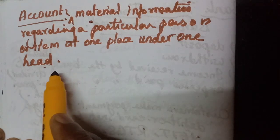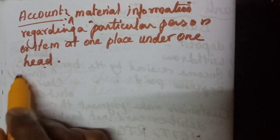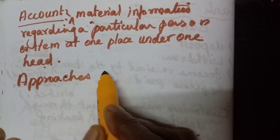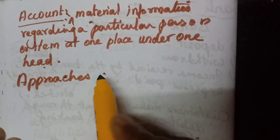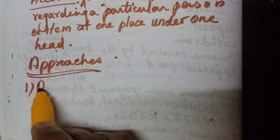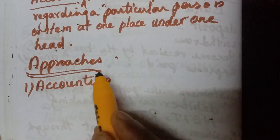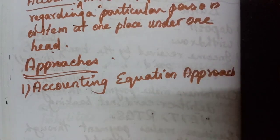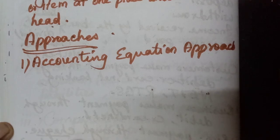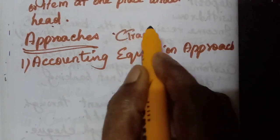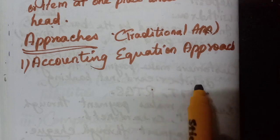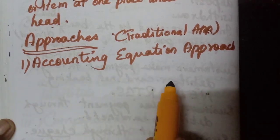Now we will learn the two approaches in accounting. There are two approaches: one is the accounting equation approach, and the other is the traditional approach. We are going to learn the accounting equation approach.